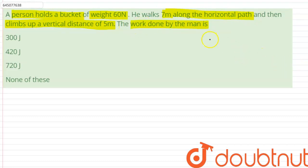So the question is asking us to find out what is the total work done by the man if he holds the bucket of weight 60 newtons and walks 7 meters along the horizontal path and then climbs up a vertical distance of 5 meters.